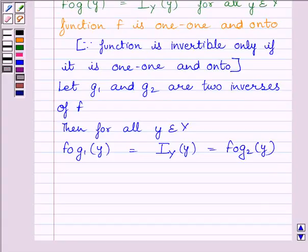Now we know function f is one-one and onto function, so the identity function of y is unique for f.